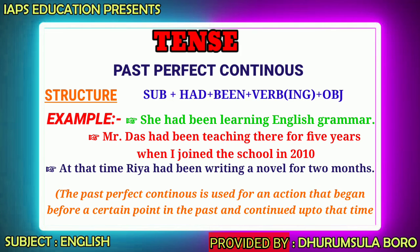The past perfect continuous tense is used for an action that began before a certain point in the past and continued up to that time.